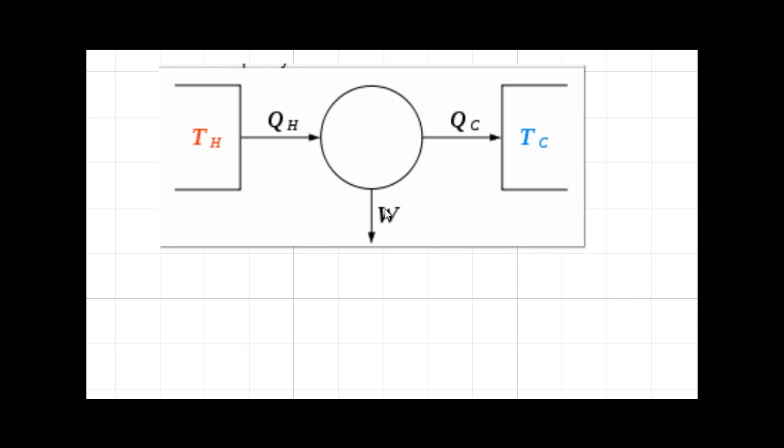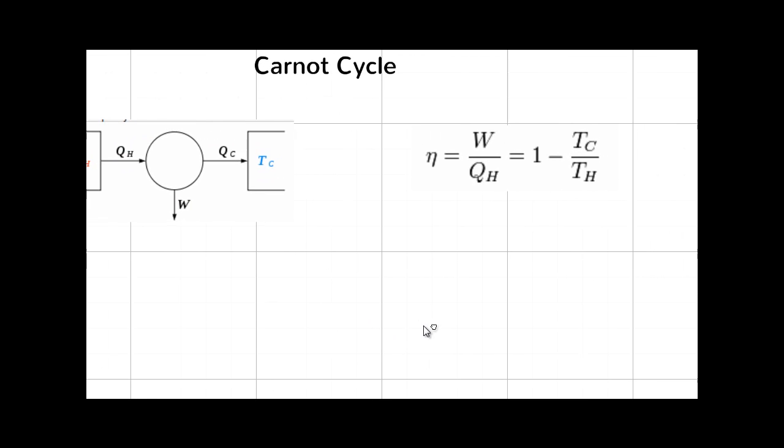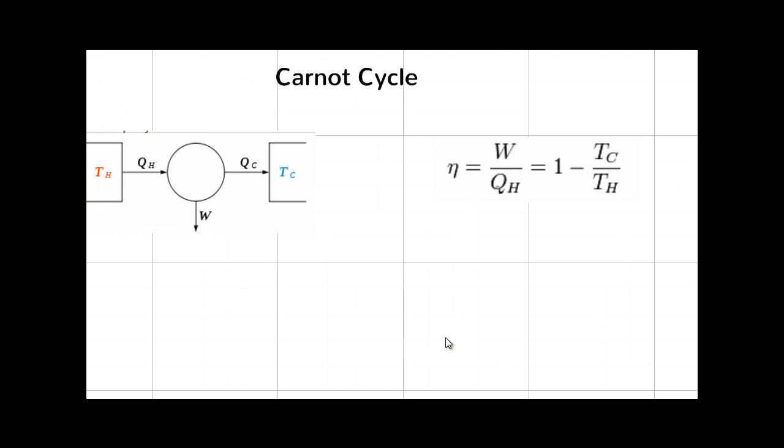So this work can be converted into electricity. That is what happens in the Carnot cycle. And the efficiency of the Carnot cycle can be represented by 1 minus Tc, or temperature of the cold reservoir, divided by the temperature of the higher temperature reservoir. So whatever heat engine that we are talking about, the maximum efficiency is always less than the efficiency of the Carnot cycle which operates between the same thermal reservoirs.